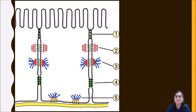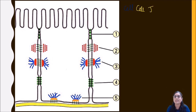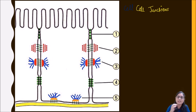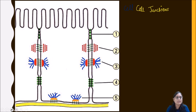For example, we can see these are basically cell junctions — they are made between two cells. There are five types: tight junctions, zonula adherens, macula adherens, gap junctions, and hemidesmosomes. This is smart work — I have written the diagram here and will write the theory detail on the other page for each one, two, three, four, five. Very simple.